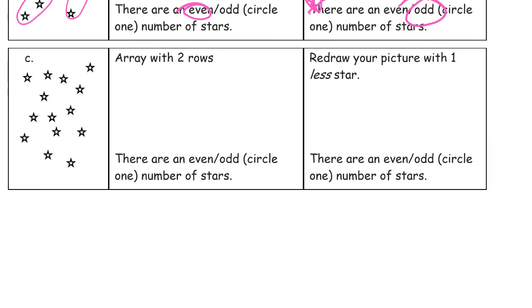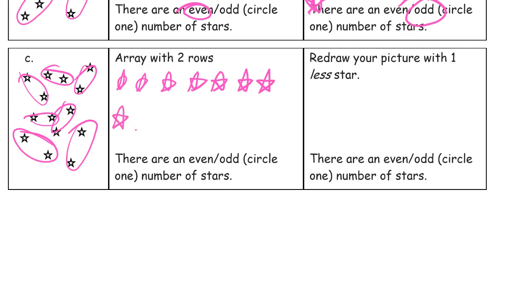Array with 2 rows. So again, how many columns do I need? 1, 2, 3, 4, 5, 6, 7. Yep. If I slow down just a little bit, I get better looking stars. There are an even number of stars.